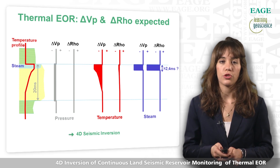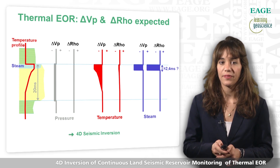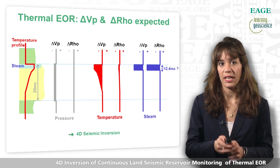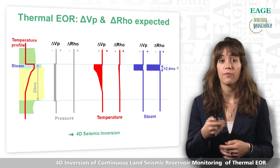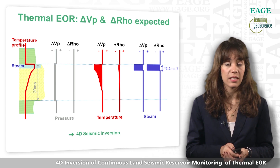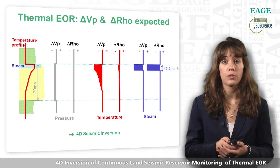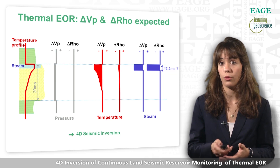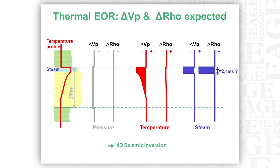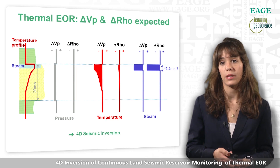If we look at the vertical distribution of these factors on P velocity and density, even if pressure has a small impact on P velocity, it affects the entire thickness of the reservoir — and same for temperature. Whereas steam has a large impact on density and on P velocity, it is only on a small layer at the top of the reservoir, about 1 to 3 ms. That's why, to map the steam chest propagation, it is required to look at seismic amplitude and have very good vertical resolution. Therefore, we conducted a 4D seismic inversion.